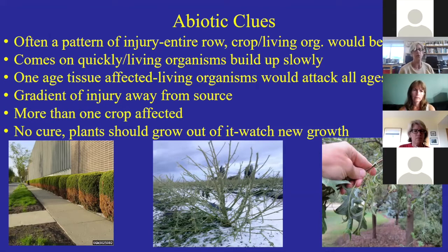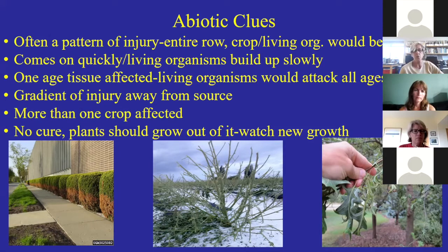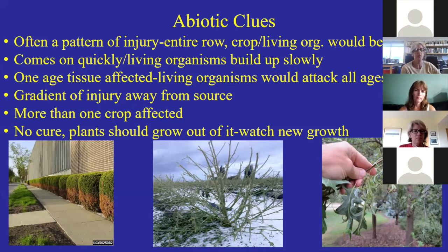Abiotic problems also come on quickly — like overnight. If your crop looked great yesterday and today something's killing the plant, it's often abiotic because living organisms build up slowly. A middle picture shows a hemp plant that got hit by a hailstorm — the day before the hemp field looked great, then hail came through and it's ruined. Another good clue is one age of tissue affected, which I see a lot in early season with cold or frost injury, but then the plant grows out of it.